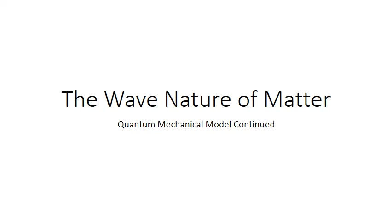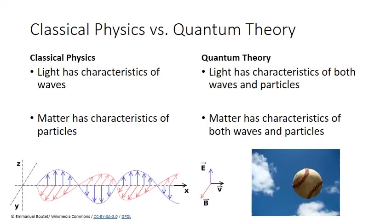In this PowerPoint, we'll continue examining the basis for the quantum mechanical model of the atom by looking at the wave nature of matter. Remember that we started our discussion of quantum theory by noting that classical physics treated light and matter as having completely distinct characteristics. Quantum theory, however, recognizes their dual nature. In a previous PowerPoint, we discussed the dual nature of light — how it behaves as a wave and a stream of particles called photons. In this PowerPoint, we'll discuss how matter, specifically matter on the microscopic scale like electrons, also has a dual nature and can behave like a particle as well as a wave. Finally, we'll find that the limitations of Bohr's model of the atom can actually be overcome if we look at the behavior of electrons in terms of waves.